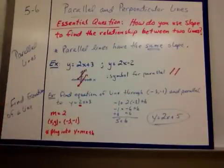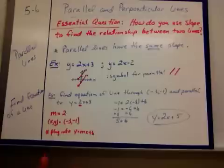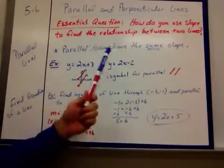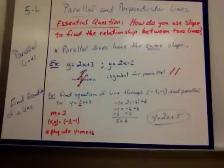Let's start out talking about parallel lines. We know that those are two lines that never intersect, like railroad tracks. The thing about parallel lines is they have the same slope.